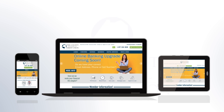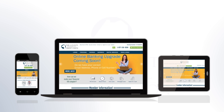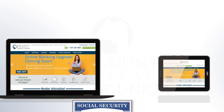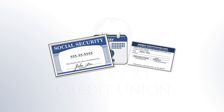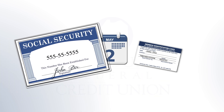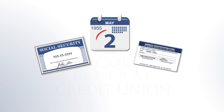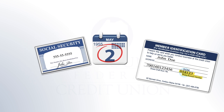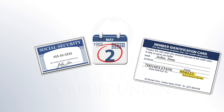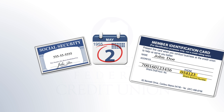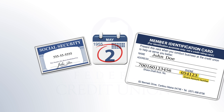Your registration will go very smoothly if you have the following information ready before you begin. You will need the last four digits of your Social Security number, your birth date, and your membership number — also known as your share account number — which was provided to you on your membership identification card when you originally became a member.